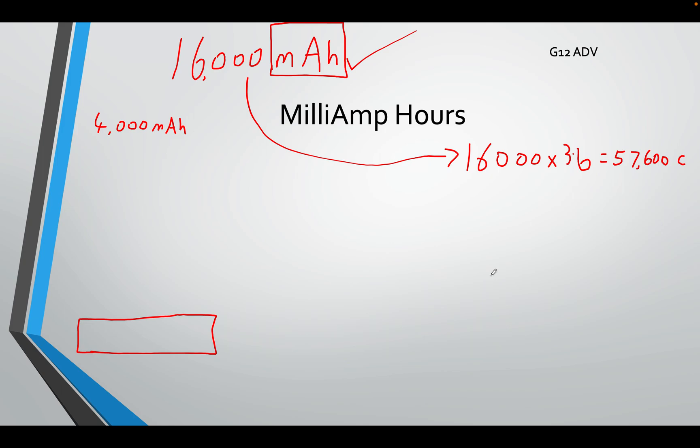Another thing that grade 12 need to know is milliamp hours. Something we discussed. One milliamp hour is literally what it says. One milliamp that can run for one hour. If I do one milliamp for one hour, I do know that there are 3,600 seconds in one hour.